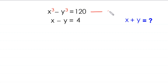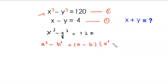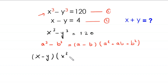Let's call this equation number 1 and this equation number 2. Starting from equation number 1: x cubed minus y cubed is equal to 120. By using the algebraic identity a cubed minus b cubed equals a minus b times a squared plus ab plus b squared, this becomes x minus y times x squared plus xy plus y squared is equal to 120.